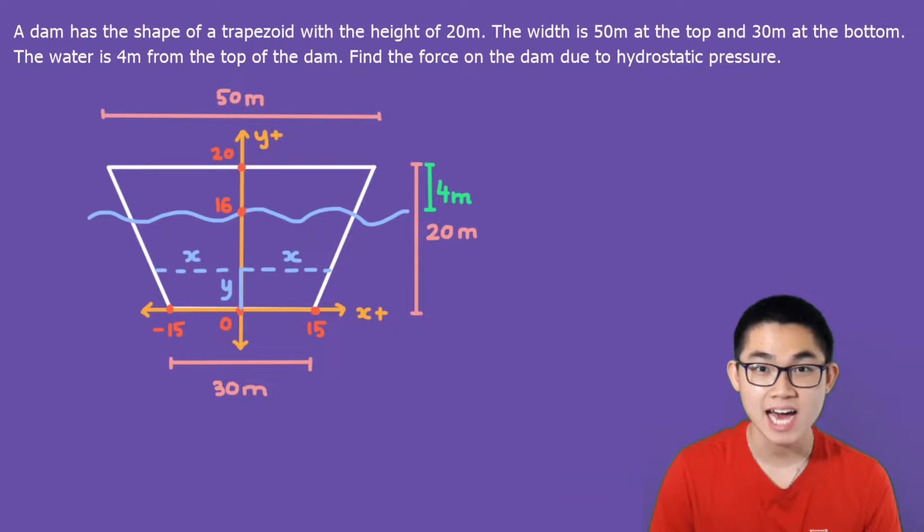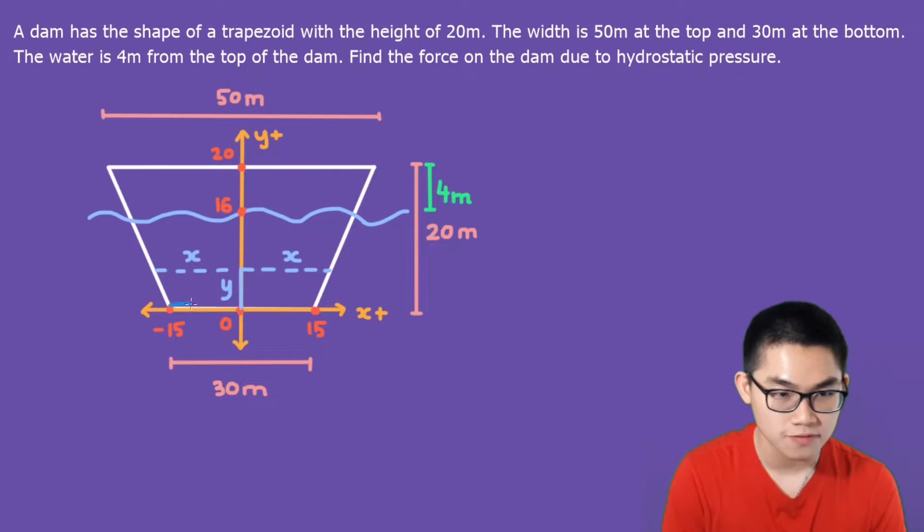To calculate the hydrostatic force, the idea is to find the force of this stripe acting on the object and then the force of this stripe and this stripe. So you get the idea. We keep doing that until we reach the surface of the water and then we add all of those forces together which gives us our hydrostatic force.